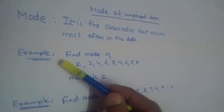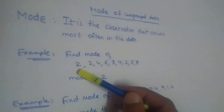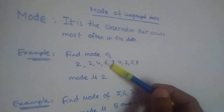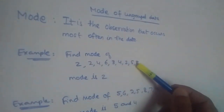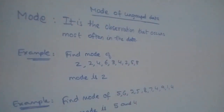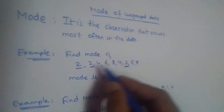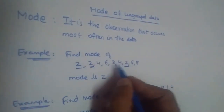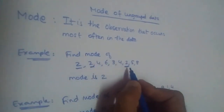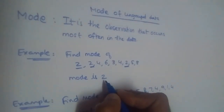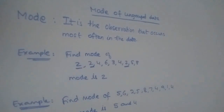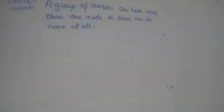Here is an example: find the mode of 2, 2, 4, 6, 3, 4, 2, 5, 8. You can clearly see that 2 is coming three times in this data. So the mode is 2.